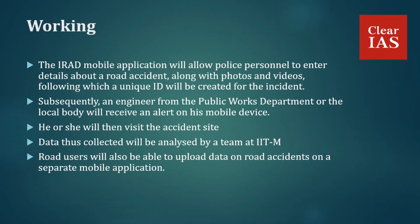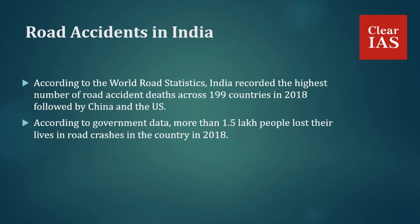Regarding road accidents in India, according to World Road Statistics, India recorded the highest number of road accidents across 199 countries in 2018, followed by China and the US. According to government data, more than 1.5 lakh people lost their lives in road crashes in 2018, of which 48 percent were between 18 and 35 years of age. More than 60 percent of such fatalities were due to over speeding. This illustrates the magnitude of road accidents in India and why a scheme like IRAD is essential to curb road accidents.